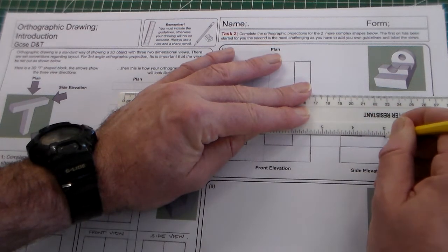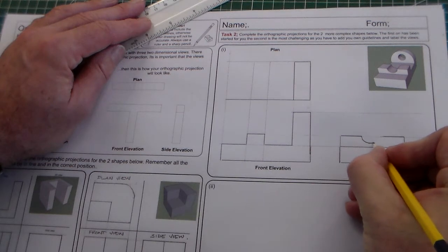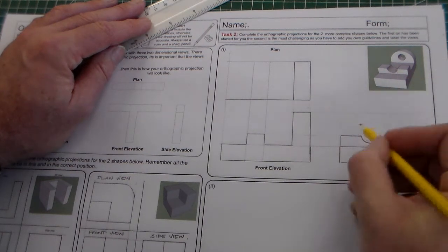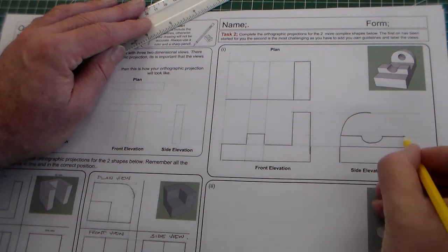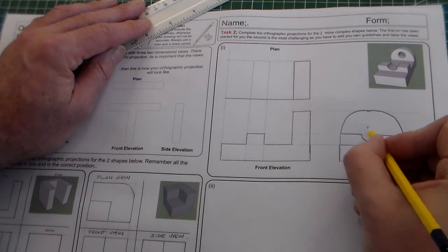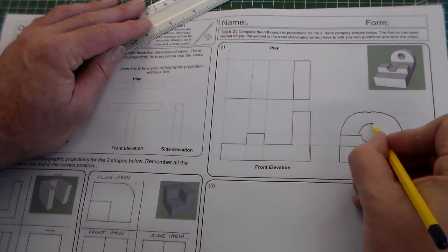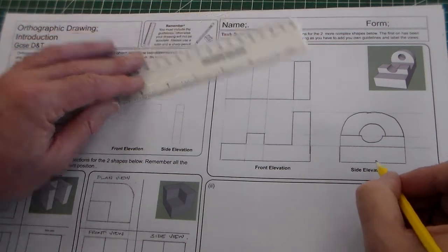Here and here I've got a shape but here I need to freehand in the bottom part of here. And also I need to freehand in the curve which comes up here and the circular hole that you would see here. So we've got our side elevation complete.